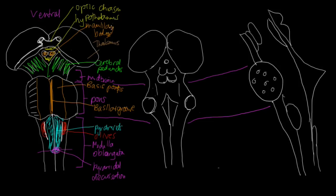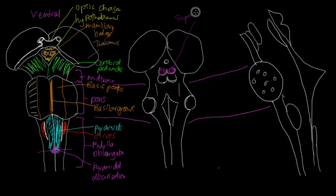Now if we move on to the dorsal surface, it looks quite different from the ventral surface. Looking at the midbrain dorsally, we don't really see the cerebral peduncles at all — we see different structures. There are four lumps that look like hills, hence the name colliculus, which means hill. We've got two pairs: here we've got the superior colliculi, which are for visual reflexes.